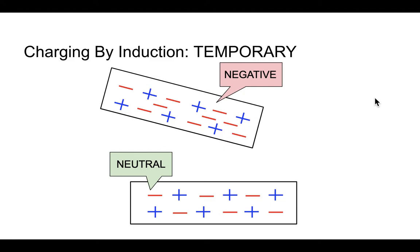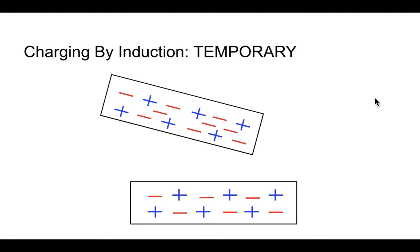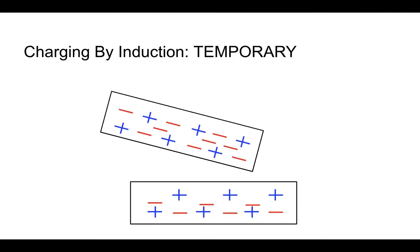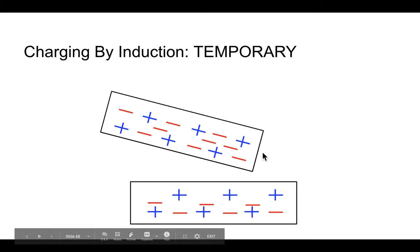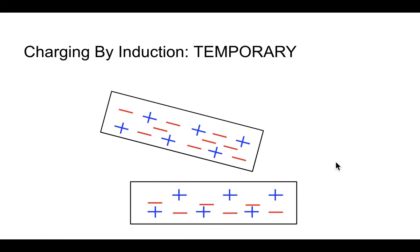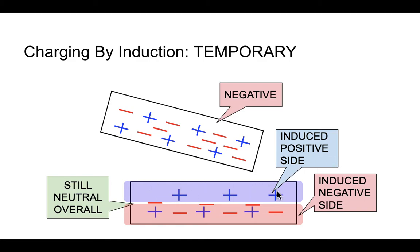We're going to bring this negatively charged object closer to this neutral object, and you can see what's happening in the neutral object. Because this negatively charged object is negatively charged, it is going to repel the negative charges in this neutral object. What's key here is that the negative charges can move or shift, but the positive charges do not — they cannot do anything like that. So as a result, the positive charges stay in place, and the negative charges sort of move away from this negatively charged object, because they repel each other. But what's left is this sort of positive edge here.